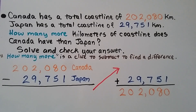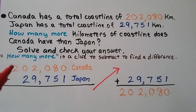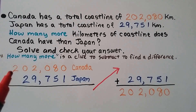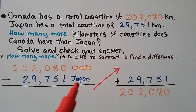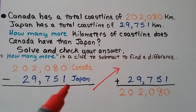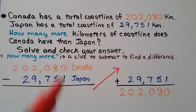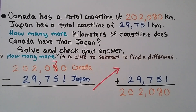Canada has a total coastline of 202,080 kilometers. Japan has a total coastline of 29,751 kilometers. How many more kilometers of coastline does Canada have than Japan? 'How many more' is a clue to subtract to find a difference. Our minuend is 202,080 for the coastline of Canada, and 29,751 is our subtrahend for the coastline of Japan. We have 1 and need to take it from 0 — we can't. So we go to the 8: it becomes a 7, and our 0 in the ones place becomes a 10.